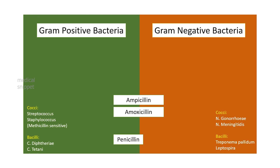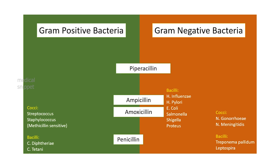Extended-spectrum penicillins cover gram-negative bacilli like Haemophilus influenzae, Helicobacter pylori, Escherichia coli, Salmonella, Shigella, and Proteus. Piperacillin is also an extended-spectrum penicillin and an anti-pseudomonal penicillin; it also inhibits Klebsiella and anaerobic organisms.